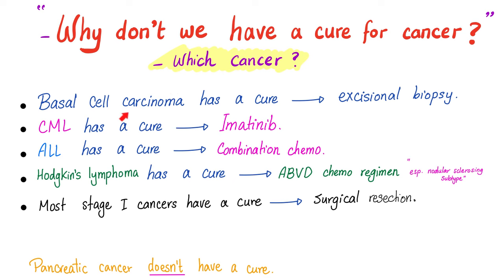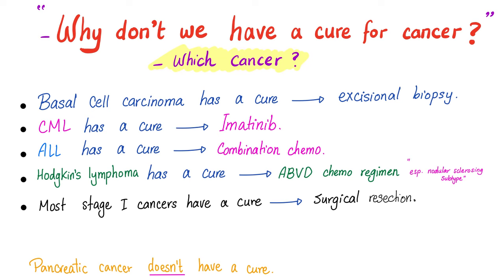Basal cell carcinoma — you go to the doctor twice: once to diagnose it, once to remove it with excisional biopsy. That's a cure for cancer. CML — imatinib works in something like 95% of cases. Many types of ALL have a cure with combination chemotherapy, working in around 97% of cases. Hodgkin's lymphoma has ABVD. Most stage 1 cancers have a cure — just remove them when they are still small and removable. But other cancers don't have a cure; pancreatic cancer is an evil cancer that can kill you in a matter of six months.